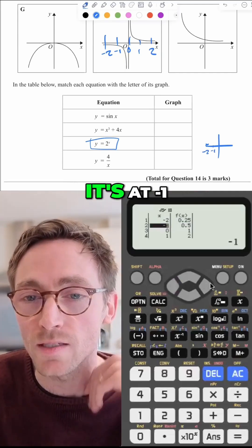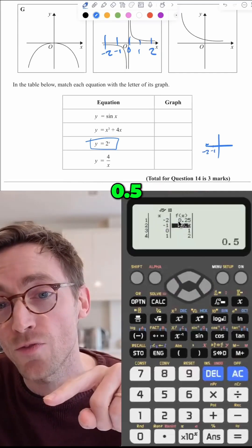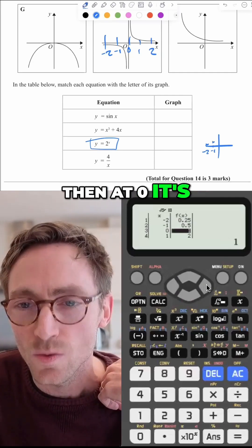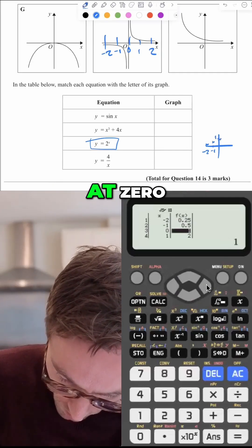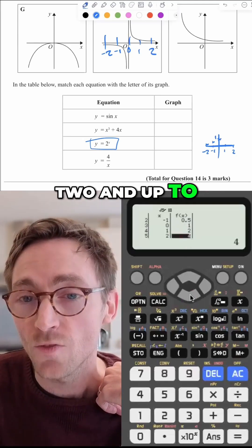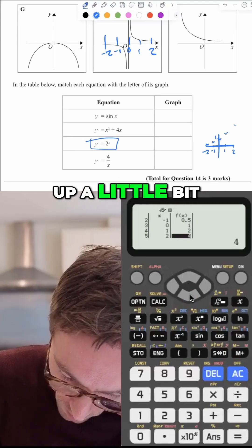Where's the graph at minus one? Well, it's at minus one, 0.5. So it's gone up a little bit. Then at zero, it's one. So then it goes to one at zero. And then what happens here and here? Oh, it goes up to two and up to four. So it goes up to two and then it goes up a little bit. Look, it's shaped like that.